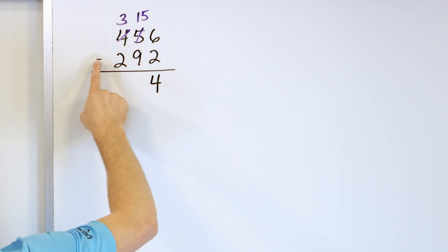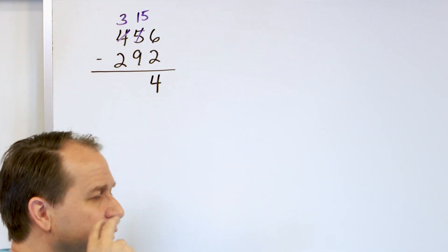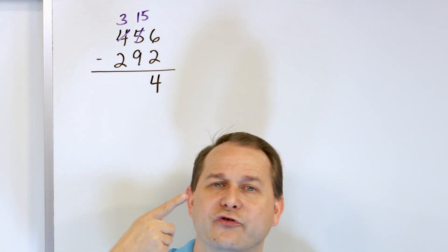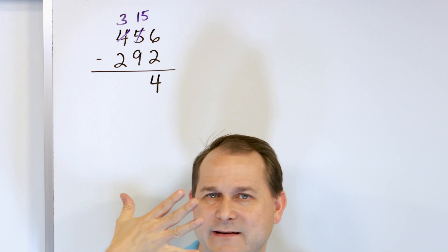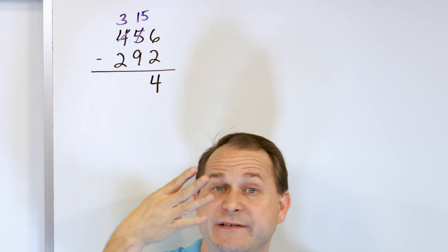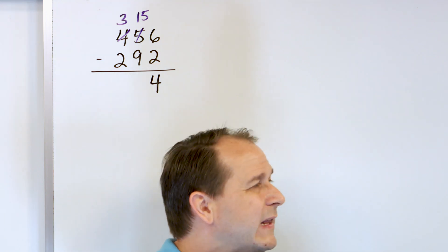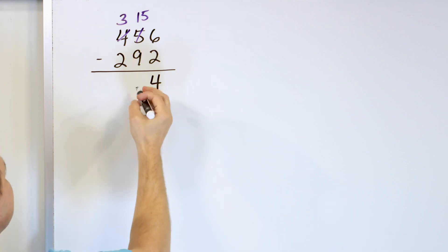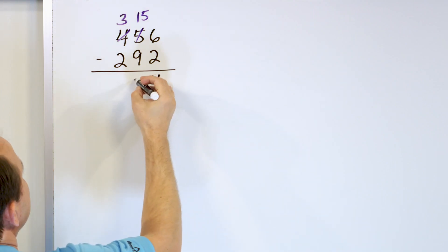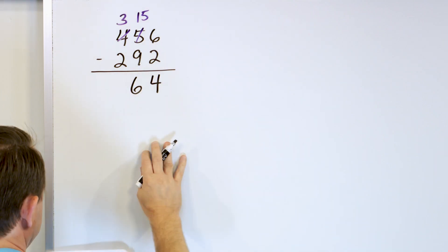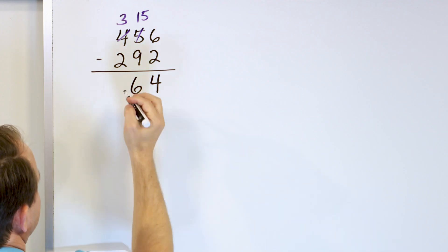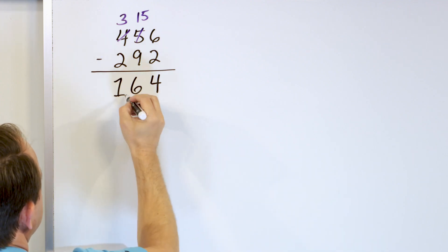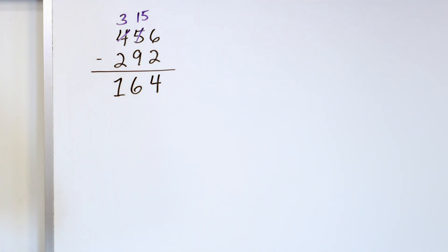What is 15 minus 9? Start with 15, go down: 14, 13, 12, 11, 10, 9, 8, 7, 6. We land on 6 — 15 minus 9 is 6. So the 6 goes right there. 3 minus 2 is just 1, so 1 goes here. So we think that we have the answer: 164.